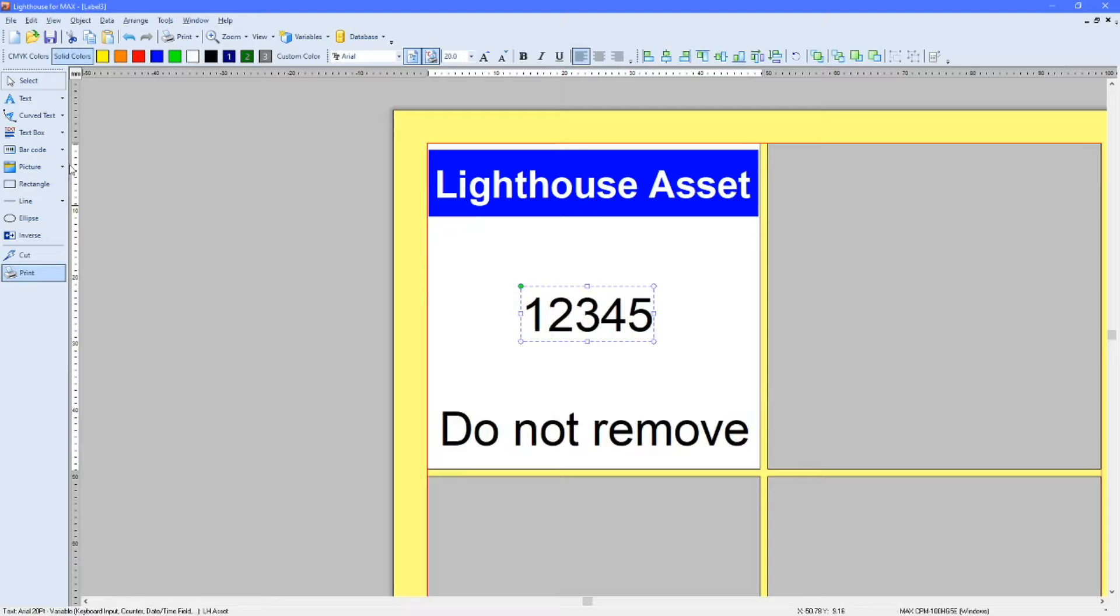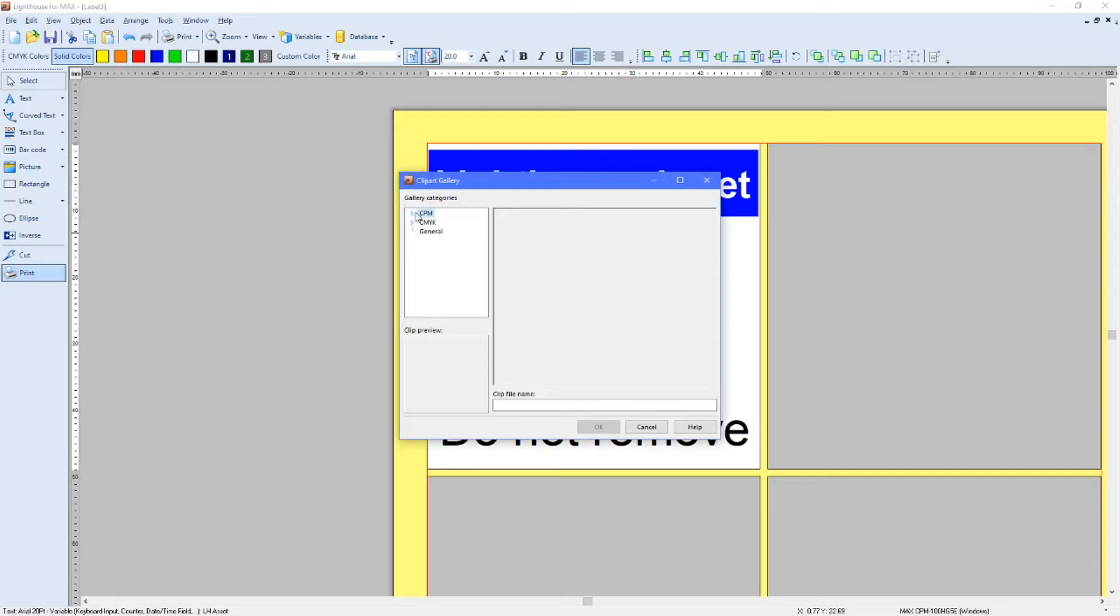And then, finally, you want to add a cut shape. If you print, if you set this to print at the minute, you'll just get four labels that are chopped off at the very end of them, but no individual labels. If I just go to a drop down or an extra picture, clip art gallery, click on to the label. The other section we're looking for is CPM, and there is actually a separate section for cut shapes.